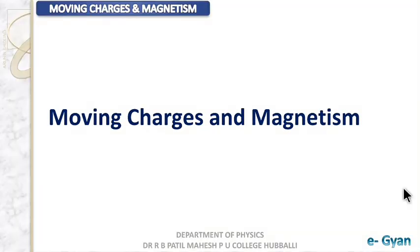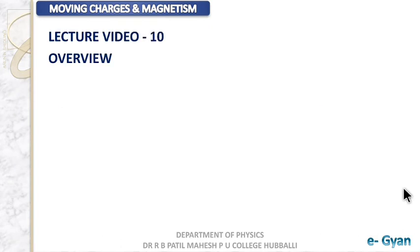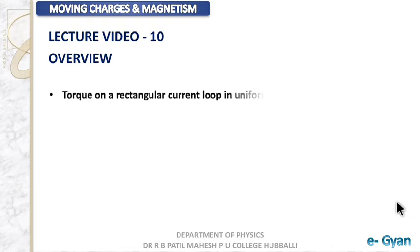Hello students, welcome to video lecture 10 of the chapter Moving Charges and Magnetism. Today we shall study the concept of torque on a rectangular current loop in the presence of an external uniform magnetic field.